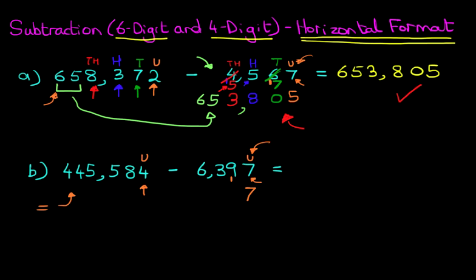Moving across to the tens. How many tens do we have? We don't have 9 — we've actually got 10. So we're going to put 0 here and cross out the 3 and put a 4. So 9 plus 1 is 10, making this number 40. Now how many tens do we need to get to? We need to get to 8. What number added to the 0 is going to give us 8? That's nice and easy — it is 8.